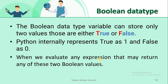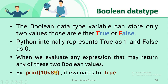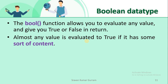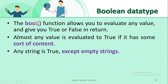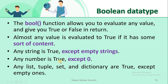Python internally represents True as 1 and False as 0. When we evaluate any expression, it returns one of these boolean values. For example, the expression 10 less than 89 is True, so it returns True. Whenever we use the bool() function on any valid Python data type, it may return either True or False. For any string value, bool() returns True except for an empty string. For all non-zero values, bool() returns True.